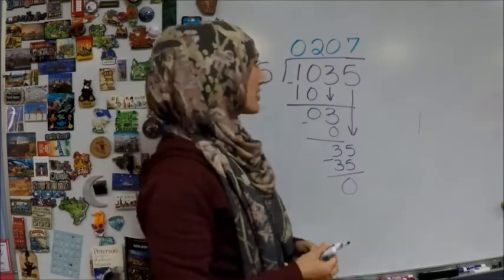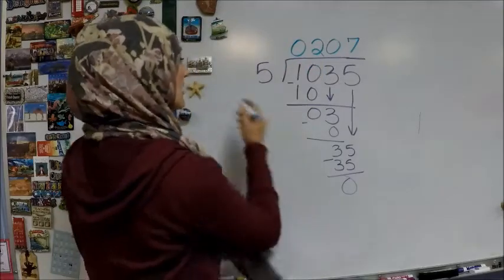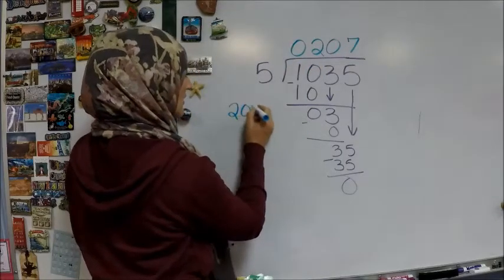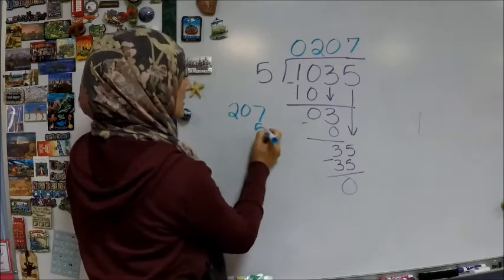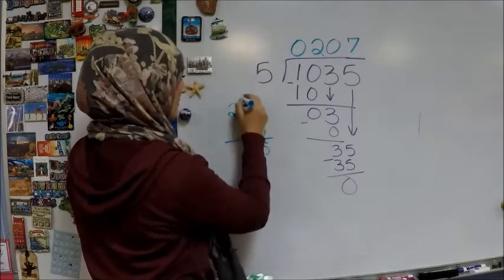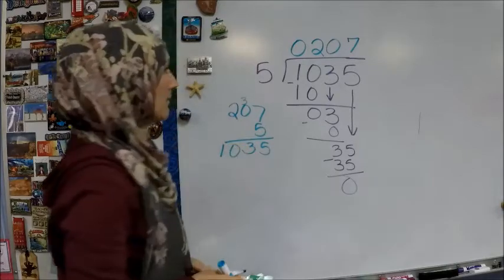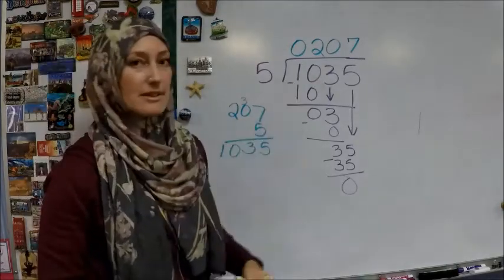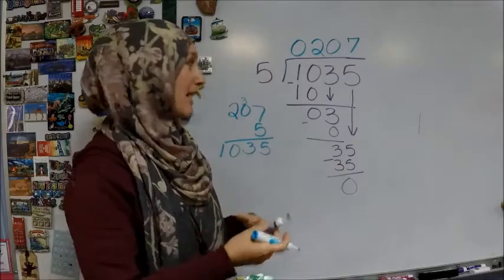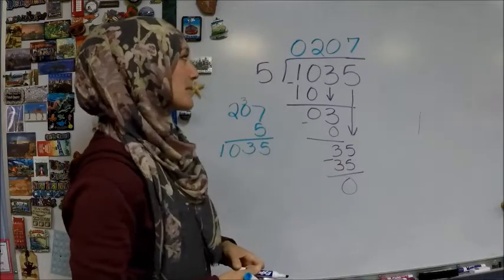So if we want to check our answer, we just take 207, and we multiply it by 5. And that will give us our dividend. So that's how the math is all related, the division, and the multiplication.